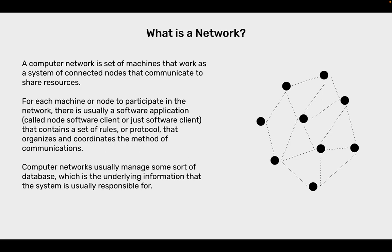What is a network? A computer network is a set of machines that work as a system of connected nodes that communicate to share resources. For each machine or node to participate in the network, there is usually a software application called node software client or software client that contains a set of rules or protocol that organizes and coordinates the method of communications. Computer networks usually manage some sort of database, which is the underlying information that the system is usually responsible for.